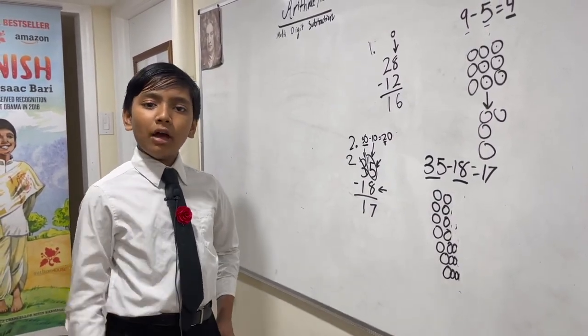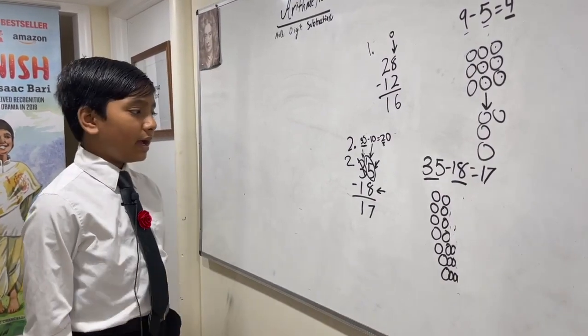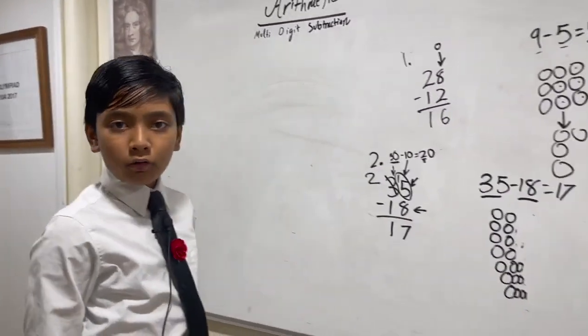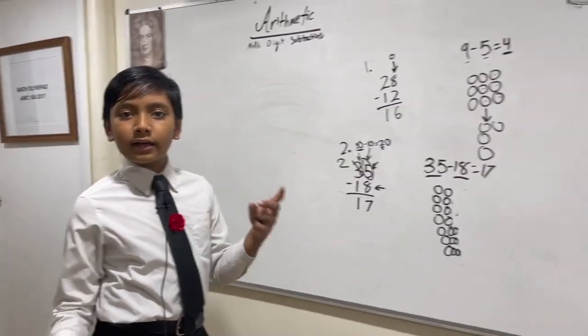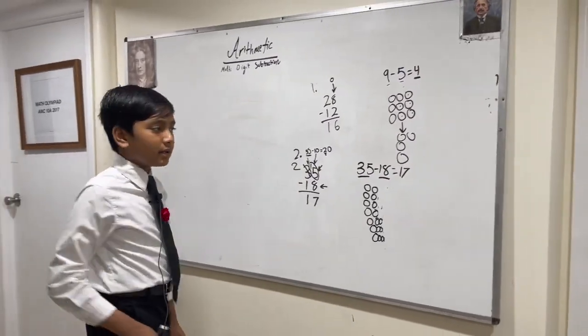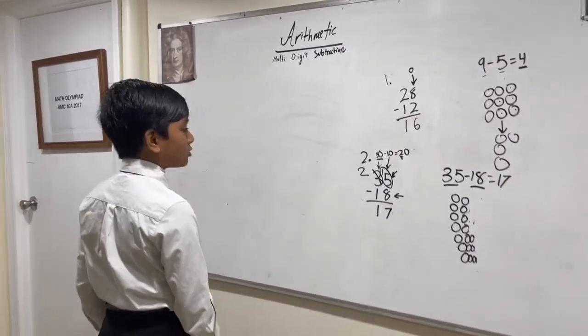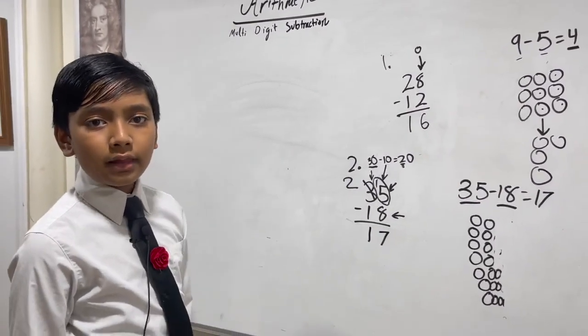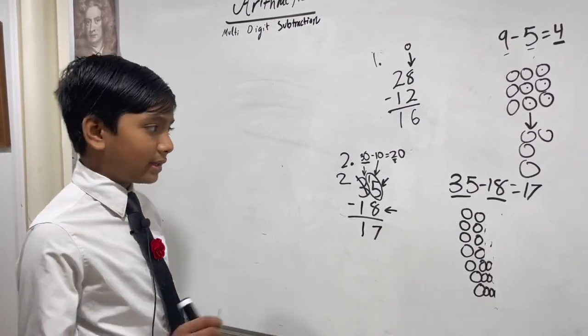Now that was pretty slow, but as you get more experience with this, which I call borrowing—also kind of like a reverse regrouping—it's gonna get faster and faster over time. In some cases you can't use this method at all, like when we subtract three and four digit numbers.